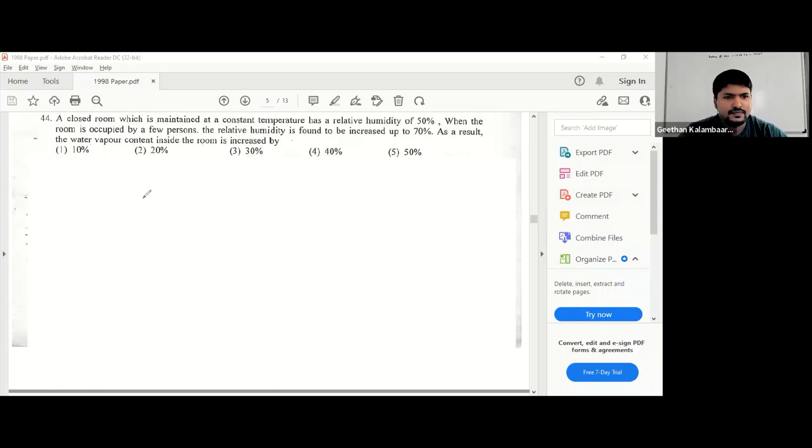There's a closed room maintained at constant temperature, so the temperature here is constant. Relative humidity RH is 50%. When the room is occupied by few persons, the relative humidity is found to be increased to 70%, so nothing changes in the room.